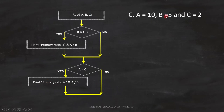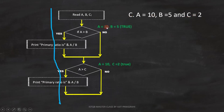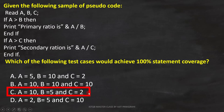Let's analyze option C: A equals 10, B equals 5, and C equals 2. Here, A is greater than B, and A is greater than C too. So this path of the code will execute. With this, we cover both the statements. That is why option C is the answer.